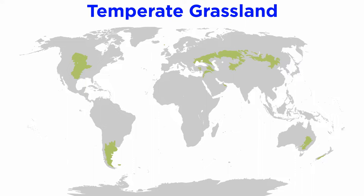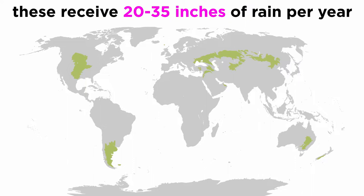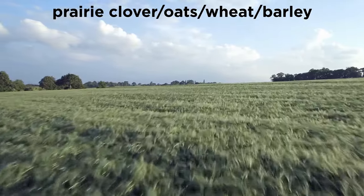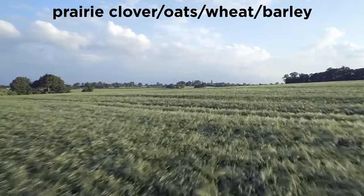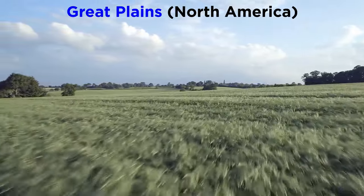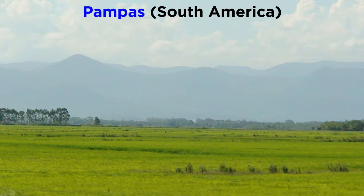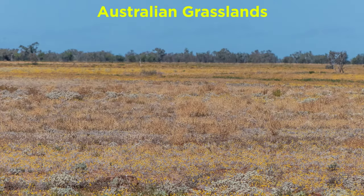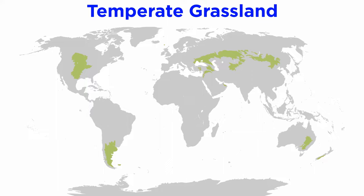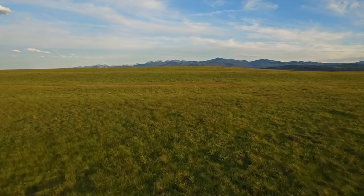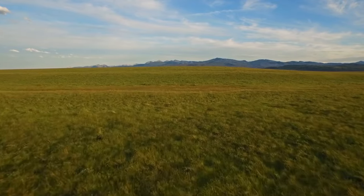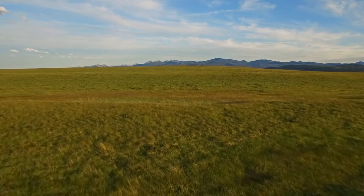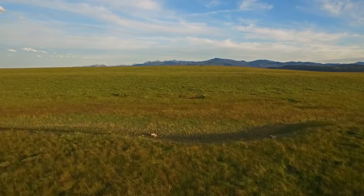If we keep moving away from the equator, we will encounter temperate grasslands. Grasslands receive about 20 to 35 inches of rain per year. The vegetation includes prairie clover, oats, wheat, and barley, and these can be found in the prairies of the Great Plains of North America, the Pampas of South America, the Veldt of South Africa, the steppes of central Eurasia, and surrounding the deserts in Australia — in other words, on every continent except Antarctica. Grasslands are generally open and continuous, fairly flat areas of grass, often located between temperate forests at high latitudes and deserts at subtropical latitudes.